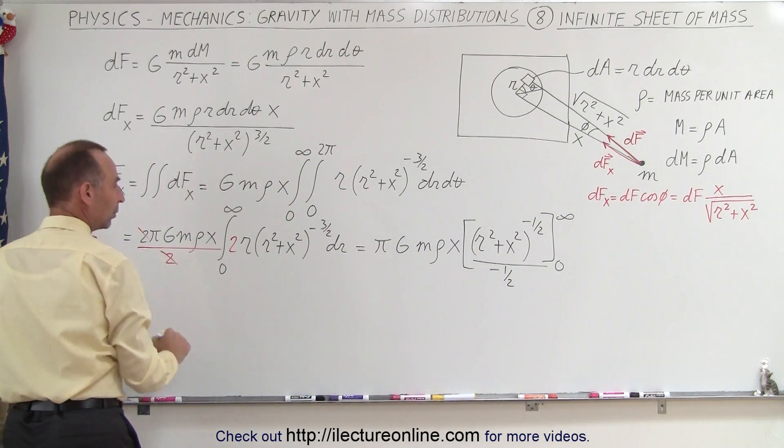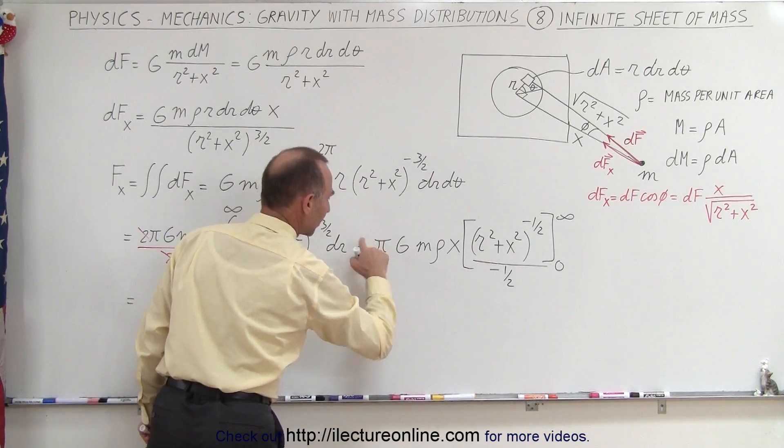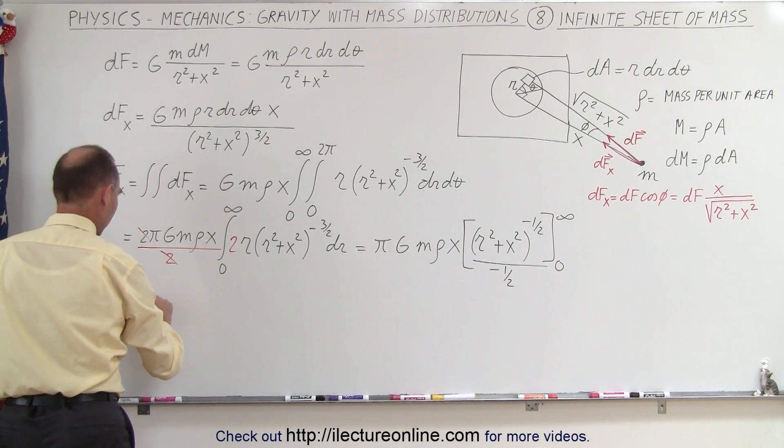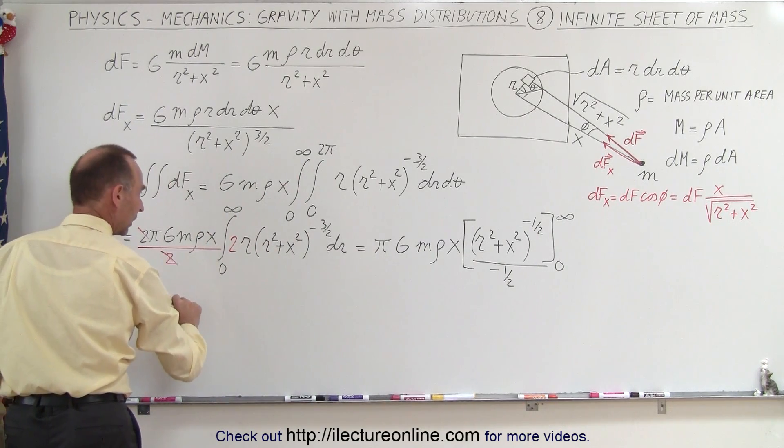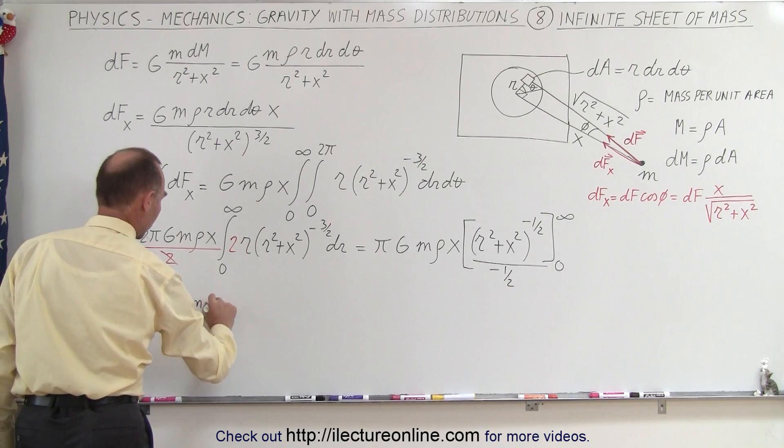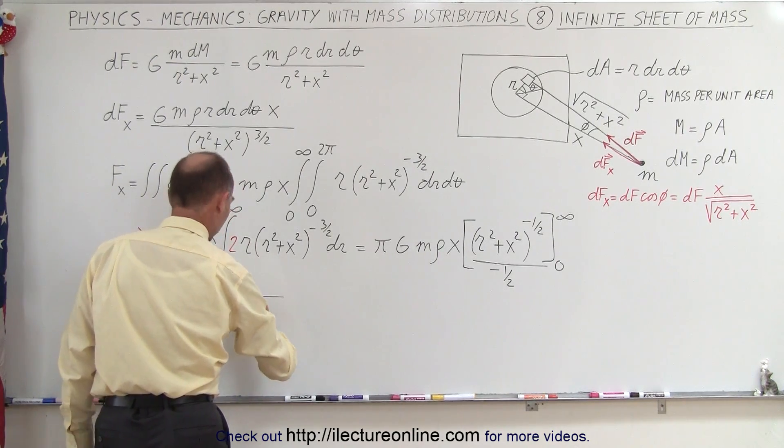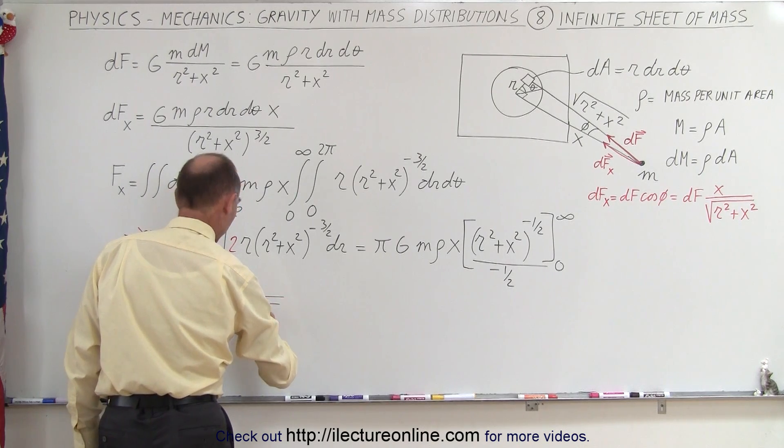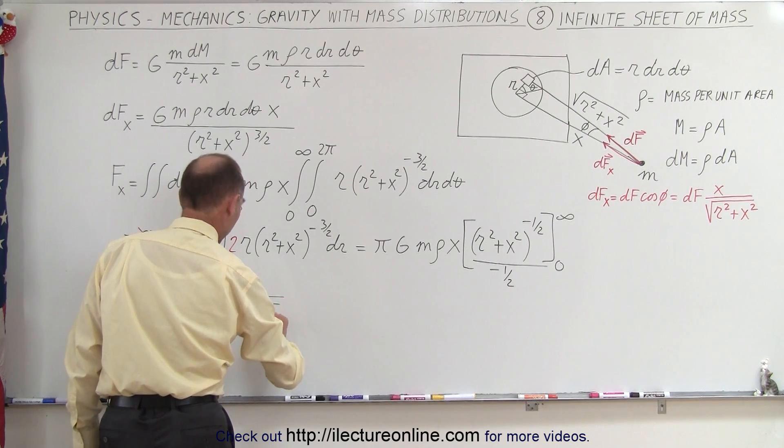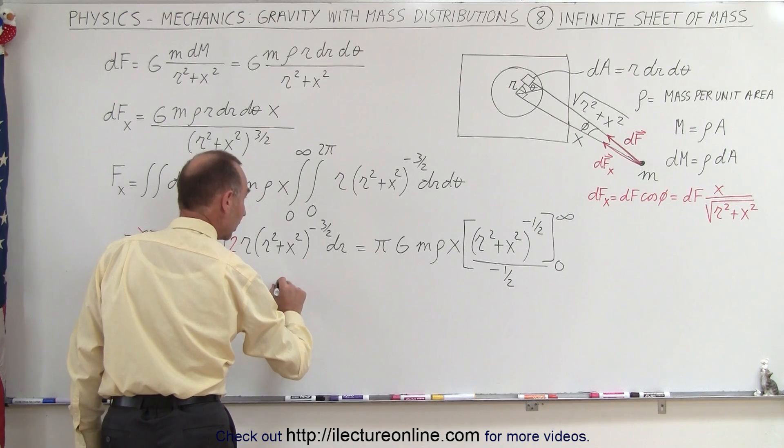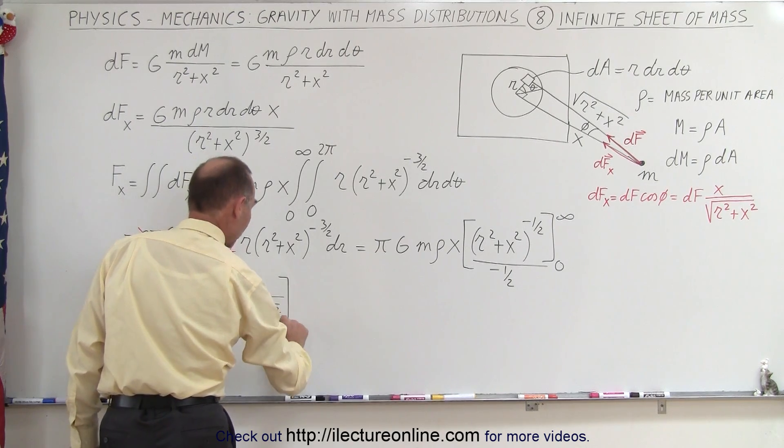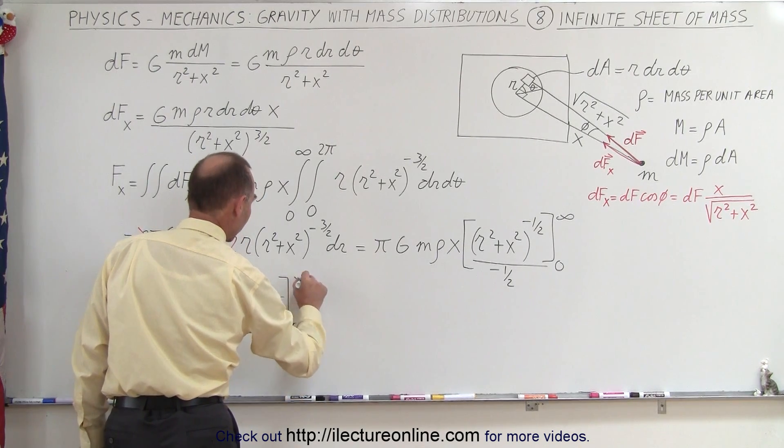So this becomes equal to, let's bring this negative up here. So we end up with a negative 2 pi g m density x. And we'll write this as 1 over the square root of r squared plus x squared. And we're going to evaluate this from 0 to infinity.